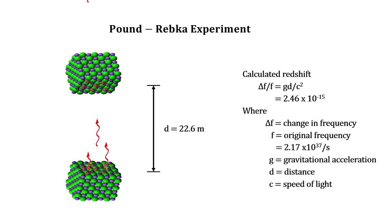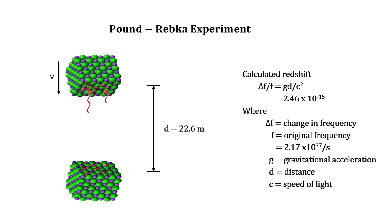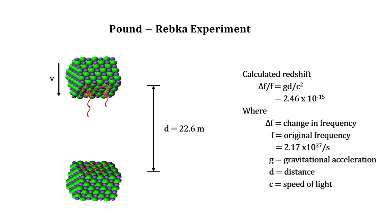The calculated shift was extremely small, but the Mossbauer effect is sensitive enough to measure it. They adjusted the detector's velocity down until absorption occurred.